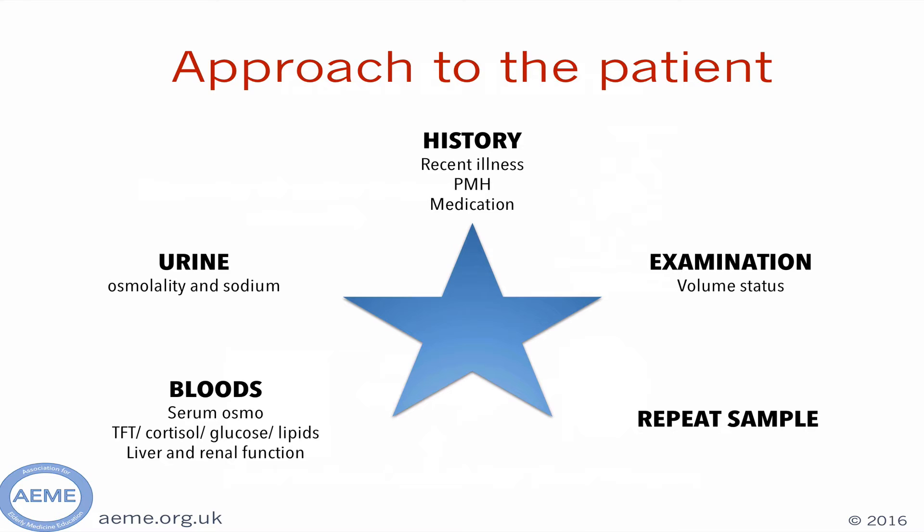Are they losing excess salt or water, for example post-abdominal surgery? Repeat the sample to check its accuracy if it is anomalous. Remember that in patients with high glucose levels, the sodium can be falsely low. Do some further tests — key ones to get off to the lab as soon as possible are serum osmolality, urine osmolality, and urine electrolytes.